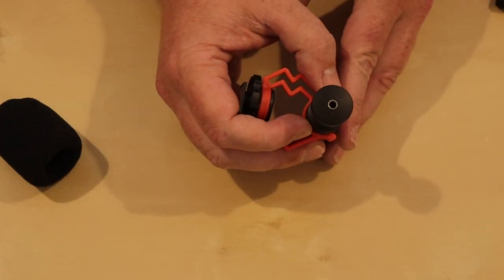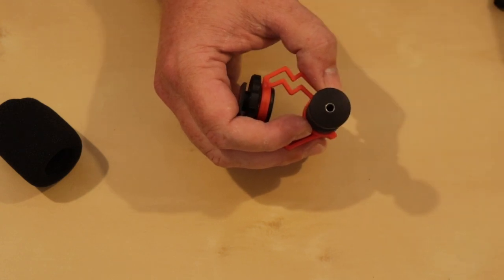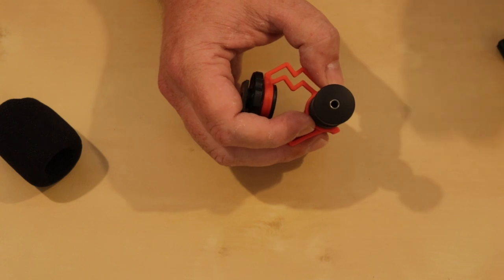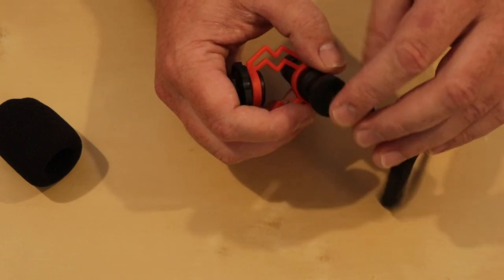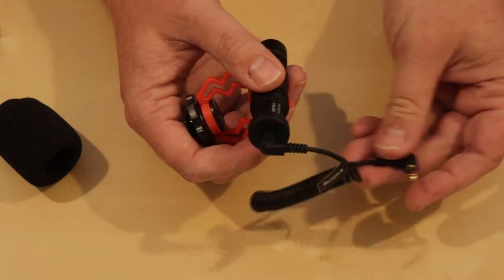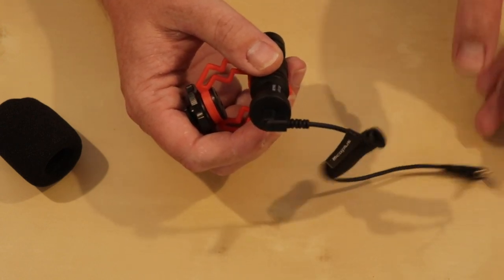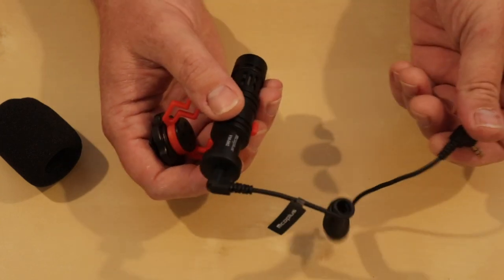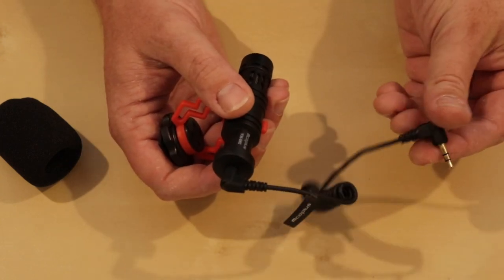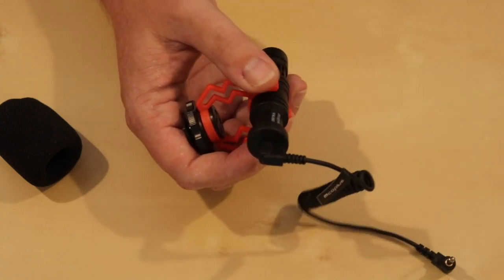And then lastly, on the back of the microphone we do have the 3.5mm jack socket. So all we need to do is obviously pop that into there and then pop the other end into the device that you wish to record to. And like I said earlier, if you use this on a boom pole, obviously you could just get a very long version of this or just use a headphone extension if you wish to do so.